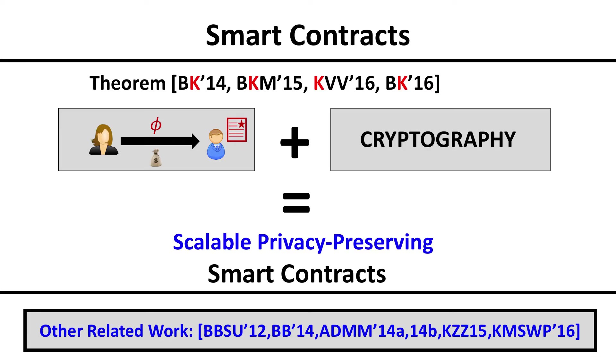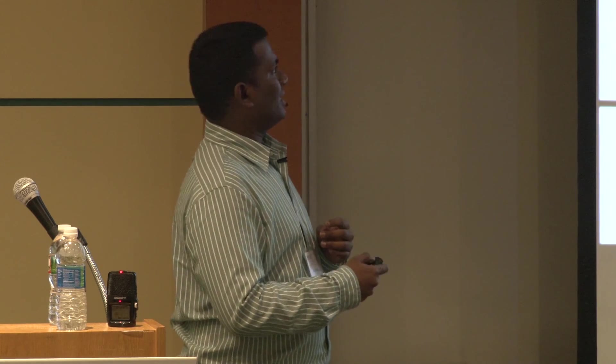Going back to the summary: the combination of claim or refund transactions and cryptography — in particular, secure computation — gives you smart contracts that are privacy-preserving and scalable in meaningful ways. There's also related work in the claim or refund transaction functionalities model, specific Bitcoin transactions, and the ledger-based transaction model. Because these claim or refund transactions are abstract, you can port them to a ledger-based abstraction and still get the same results. Thank you for your time.